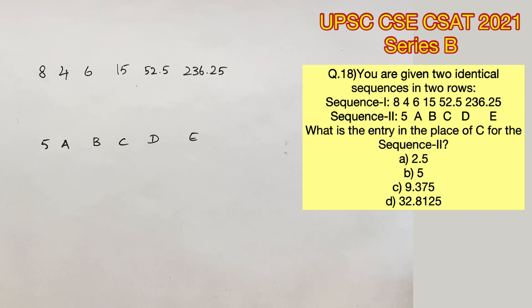We have been given two identical sequences in two rows. The first sequence is set to follow a pattern. The second sequence is also set to follow the same pattern. So let's decode the pattern in the first sequence.